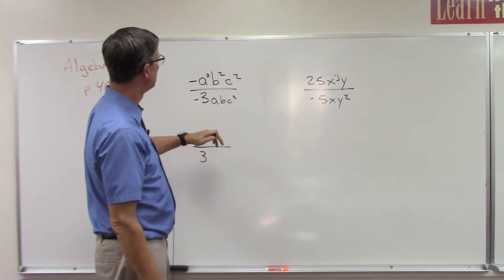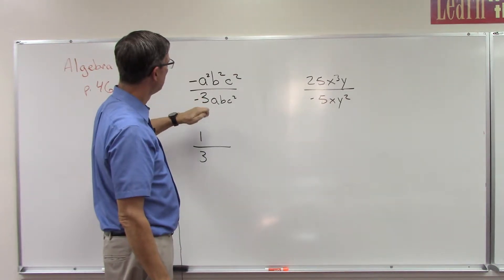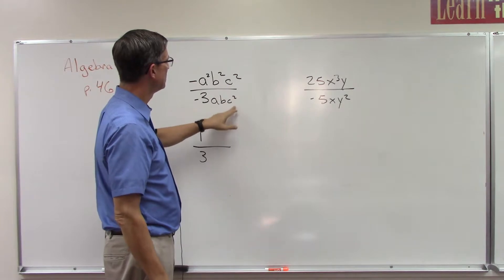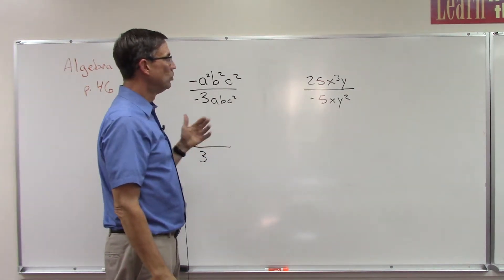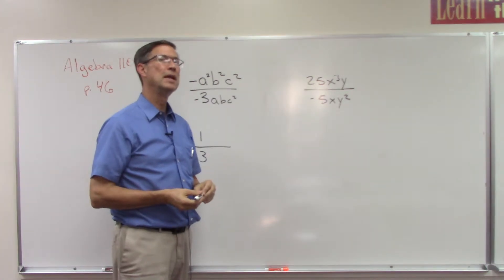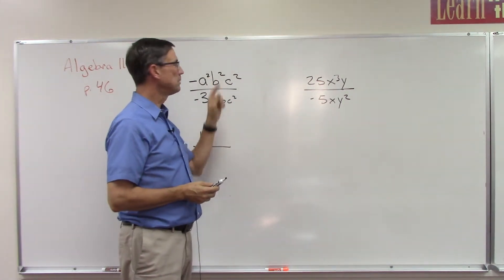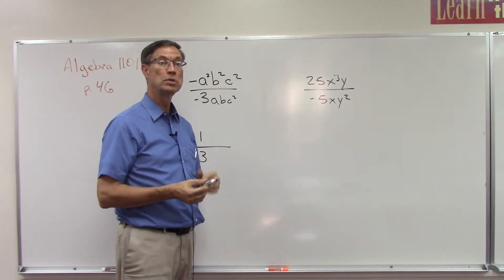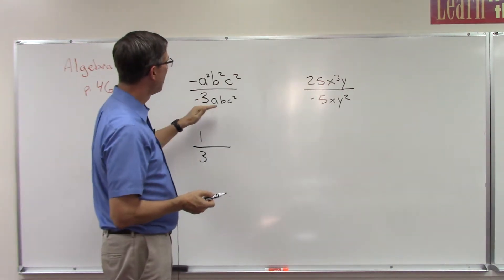Let's continue this problem. We have a squared on the top, a on the bottom, b squared on the top, b on the bottom, and c squared on the top, c squared on the bottom. The rule - if you think back to PACE 1097 - is whichever exponent is the largest, that's where you're going to subtract and then you keep that variable on that side of the fraction line.